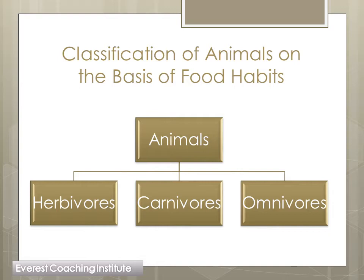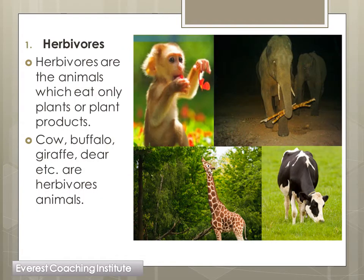We divide animals into three categories based on what they eat: herbivores, carnivores, and omnivores. Now first of all, herbivores - look, here I have put pictures of animals: a monkey, an elephant, a giraffe, a cow.